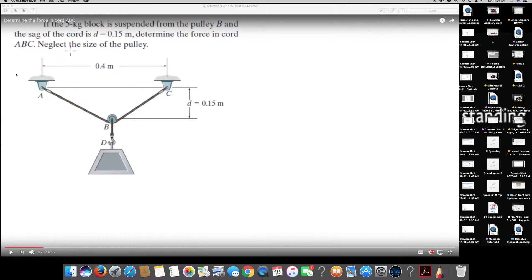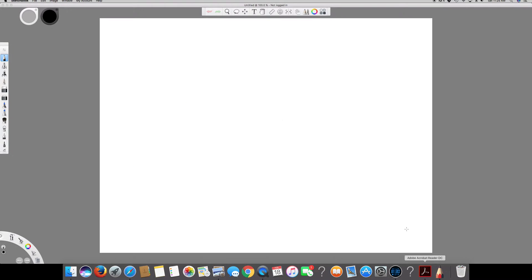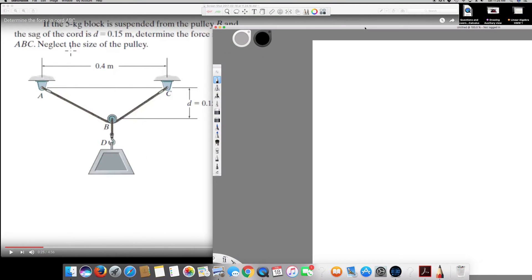What's going on guys, in this video I'm going to show you how to solve this question. This question is asking if the 5kg block is suspended from the pulley B, and the sag of the cord is d equal 0.15 meter, determine the force in the cord ABC. Neglect the size of the pulley.